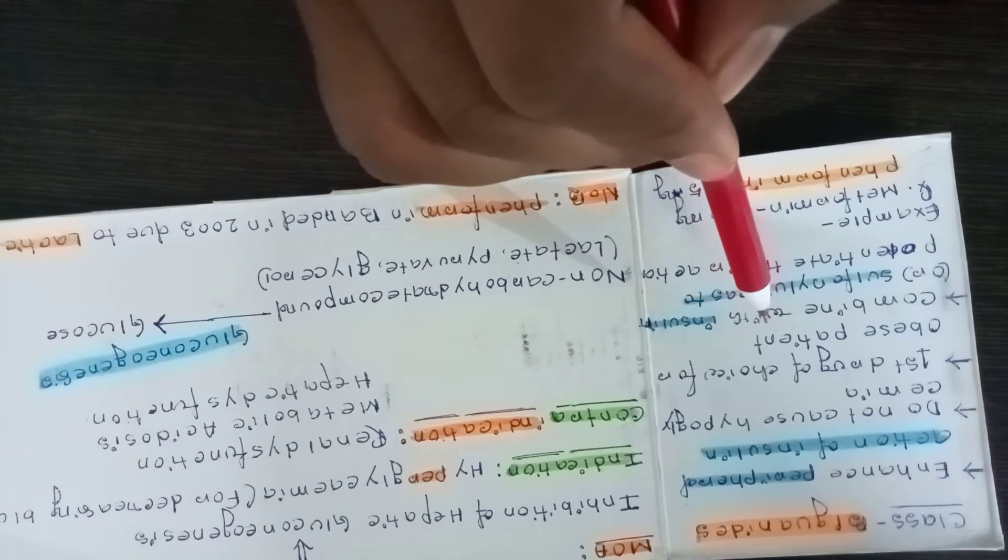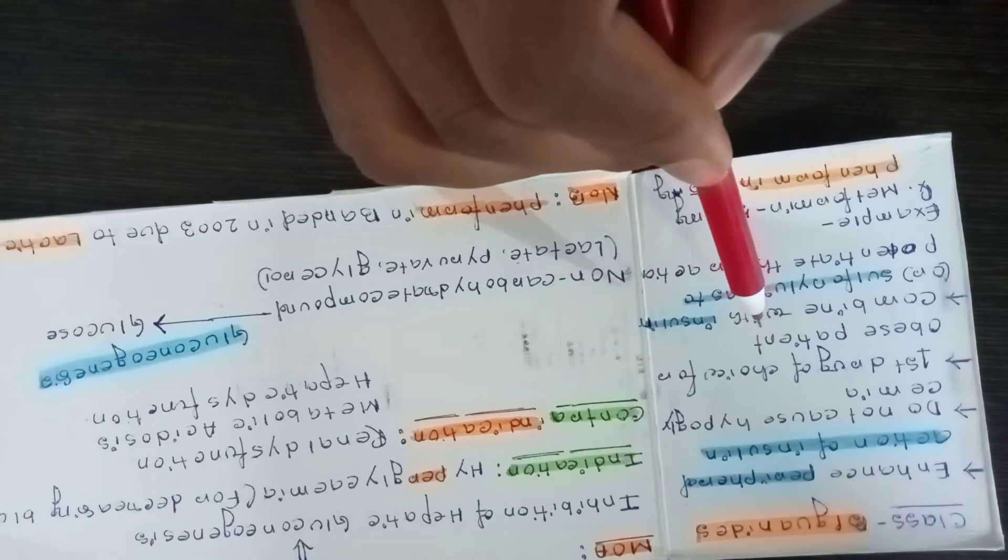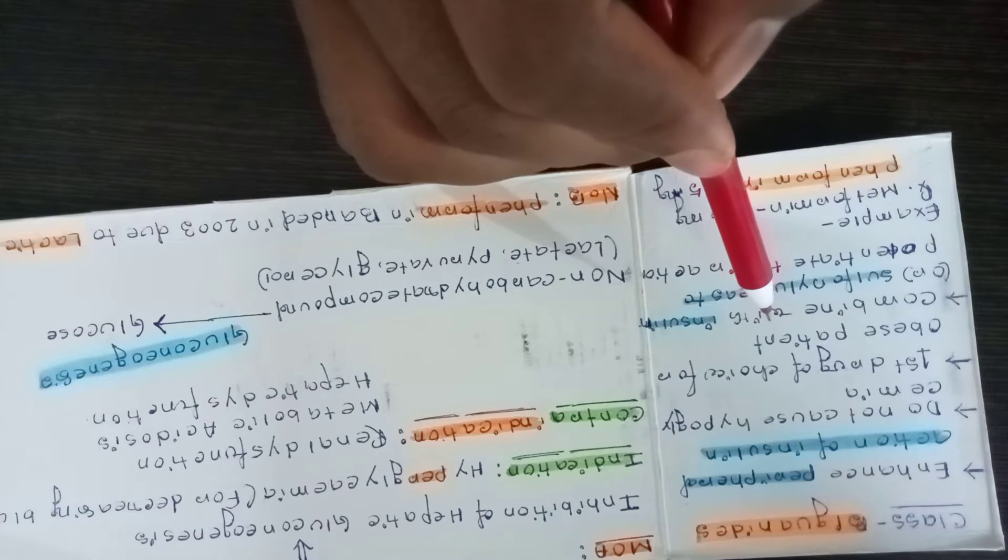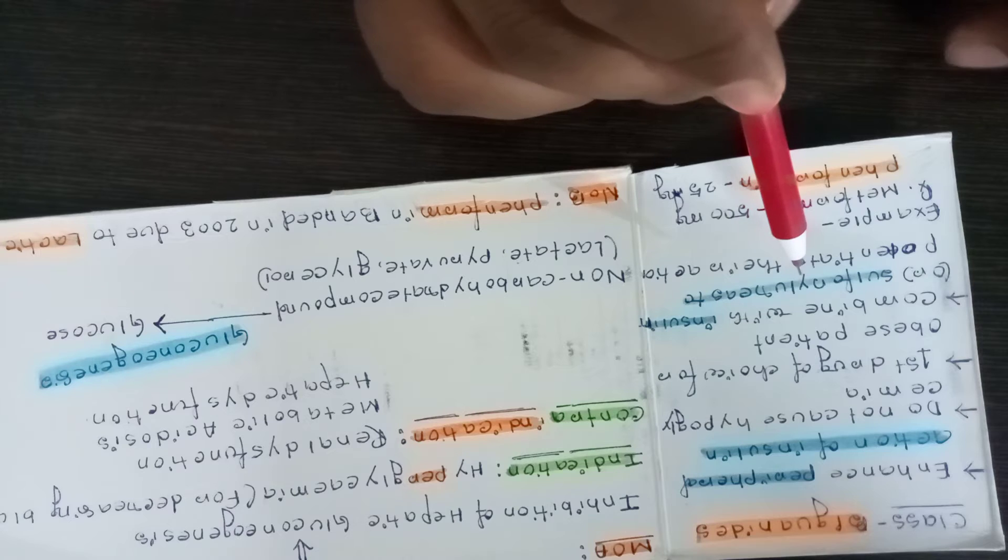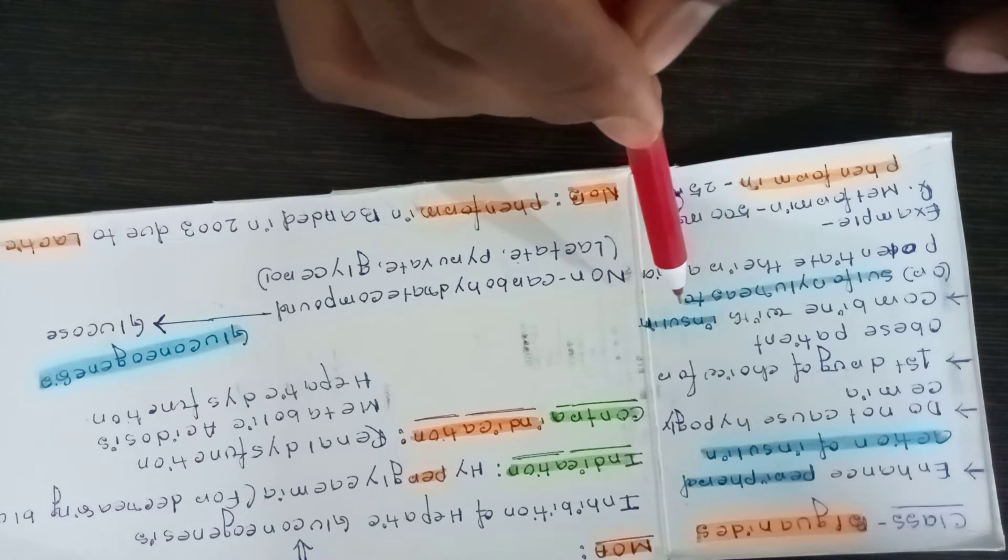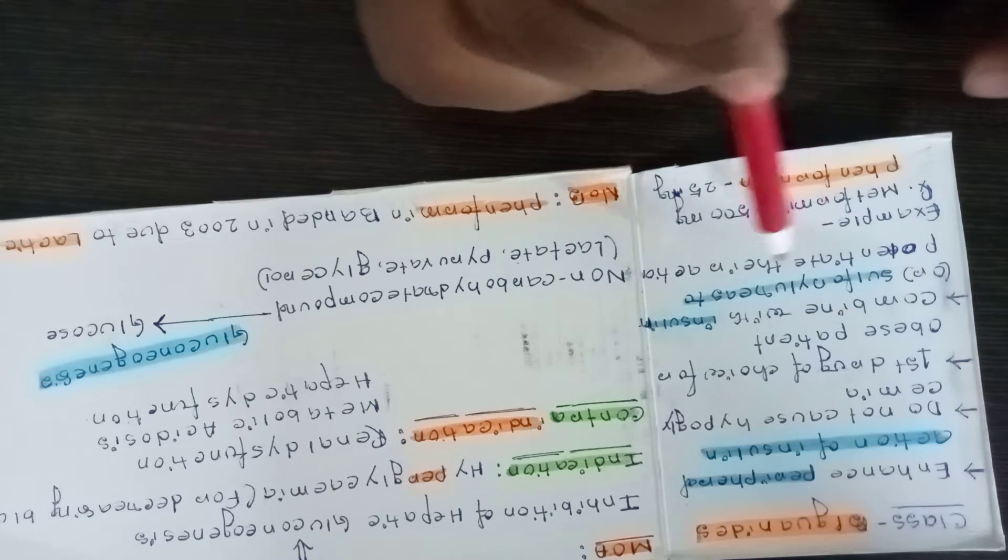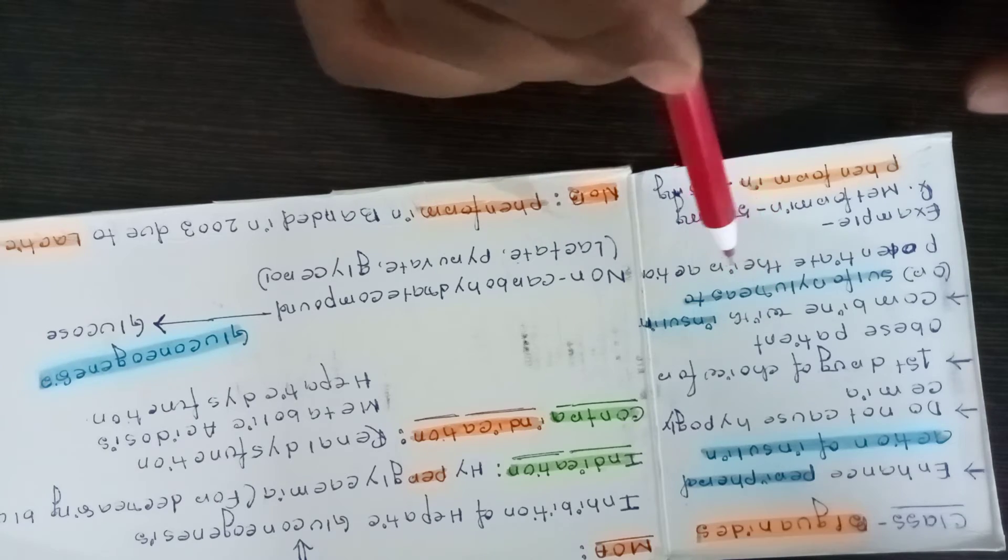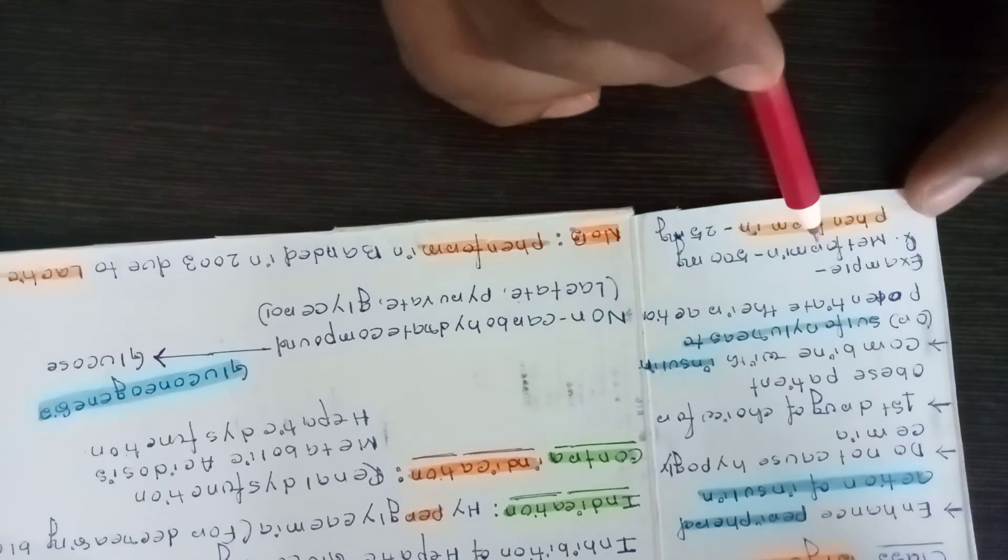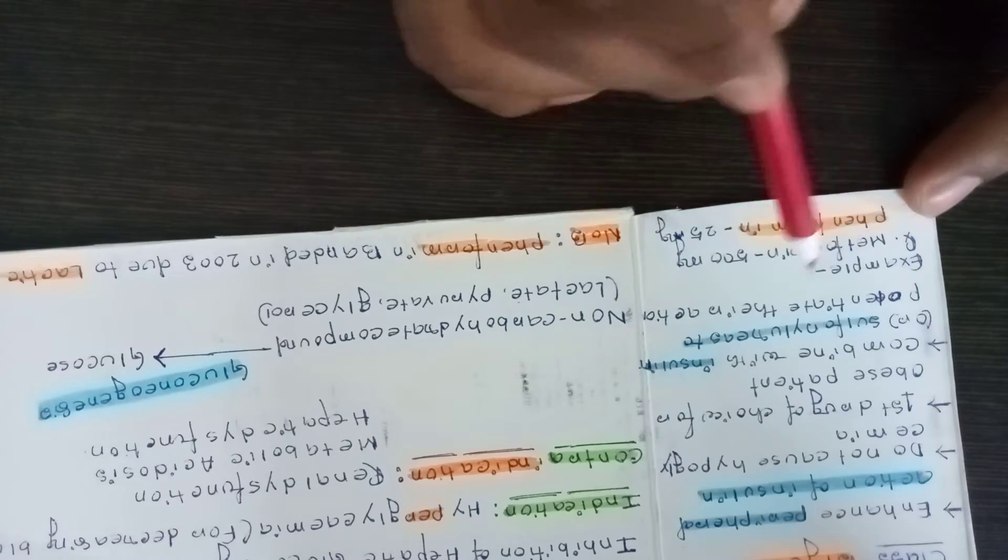If the patient is obese, you can give this drug. This is a first-line drug for diabetes mellitus. By combination, you can give with insulin and sulfonylureas to potentiate the biguanides action.